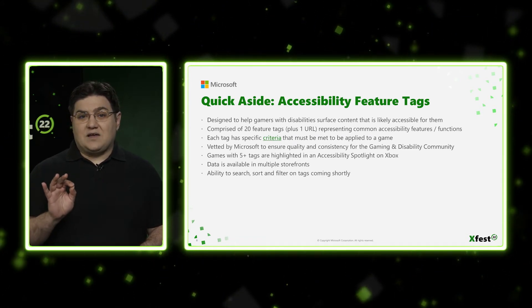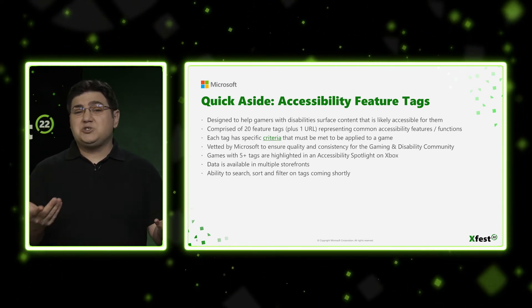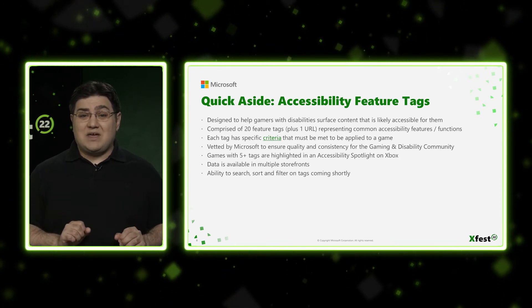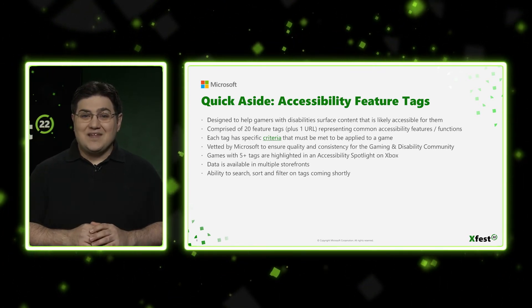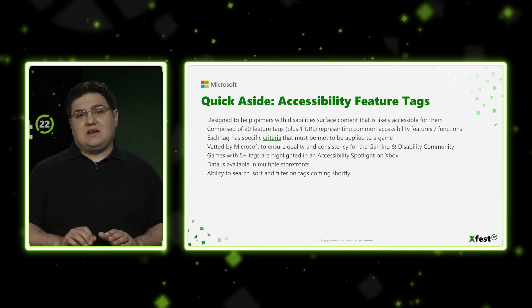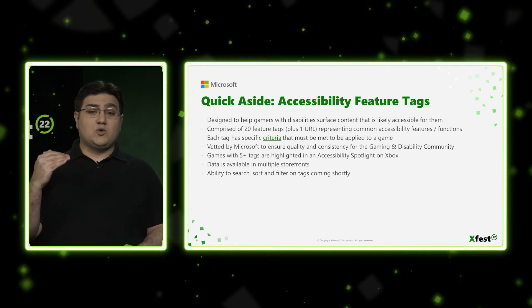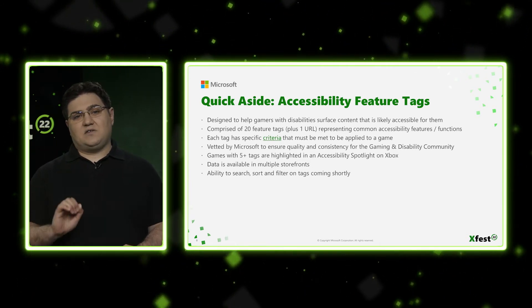From a new accessibility spotlight page, players can find products that have been tagged by developers as having multiple capabilities, including spatial audio, input remapping, narrated game menus, on-demand tutorials, and more. Players can also search the store for games with specific tags. Each of these features is validated by our game reliability engineering team against a strict set of criteria that aims to ensure games meet an aspirational quality bar and provide a consistent experience for our community. Accessibility feature tags can be found on the product details page of games across a variety of storefronts, including the Xbox Store, Mobile Game Pass app, PC Xbox app, and Xbox.com.